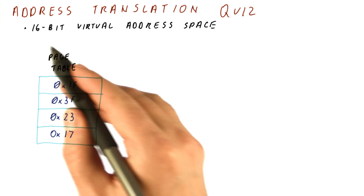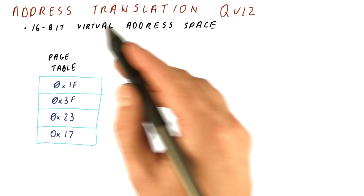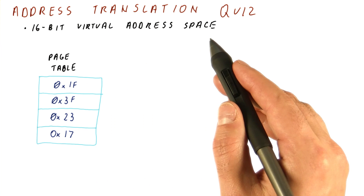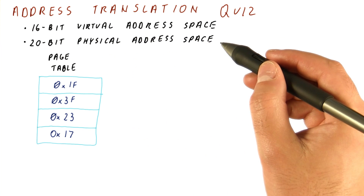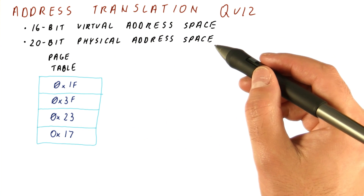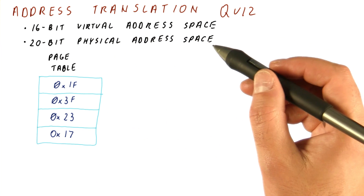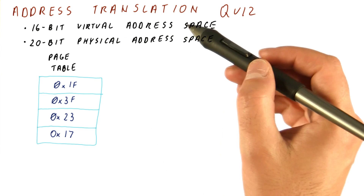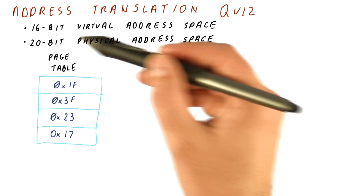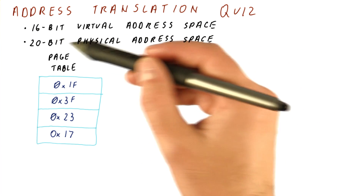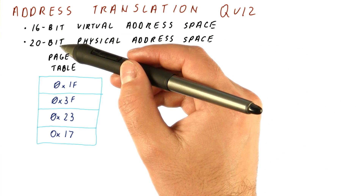Suppose that this machine has a 16-bit virtual address space and a 20-bit physical address space. That is, the virtual address is a 16-bit address, but the physical address is a 20-bit address.